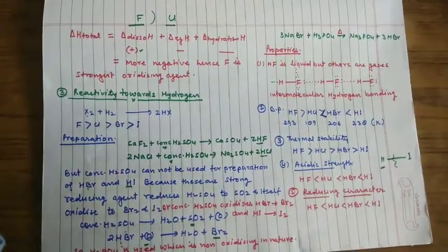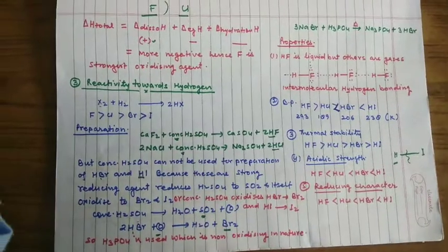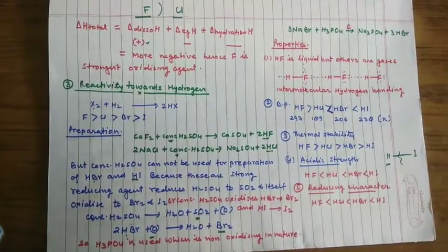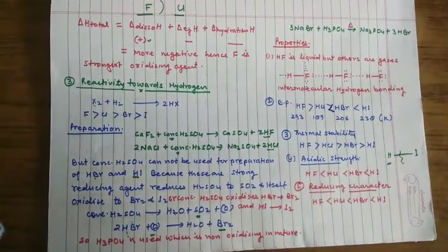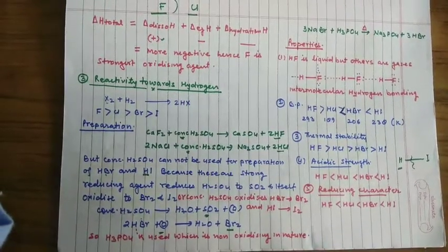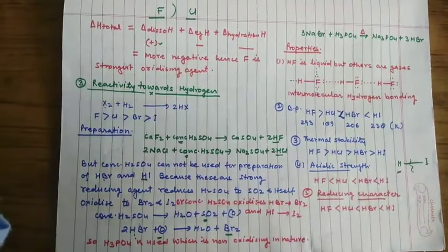You have seen in the previous video that halogens have great affinity towards hydrogen. They react with hydrogen at different conditions of temperature and presence of light and form hydrogen halide of HX type.